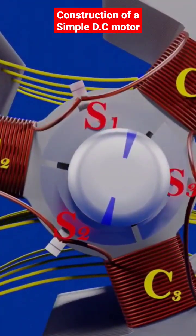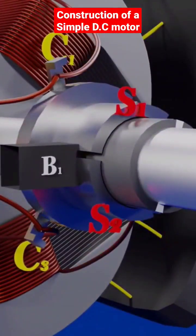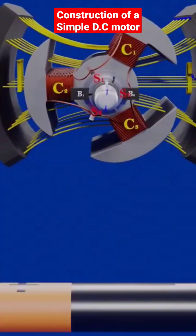Now, the split rings are gently attached to the carbon brushes, such that split ring and carbon brushes can slide relative to each other, which is then connected to positive and negative terminals of the battery with the help of an electric wire.